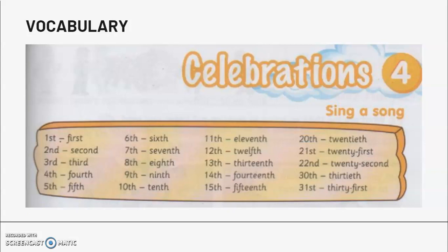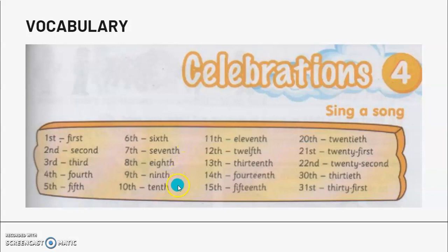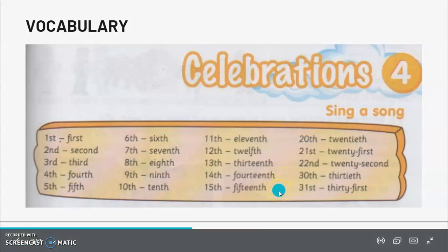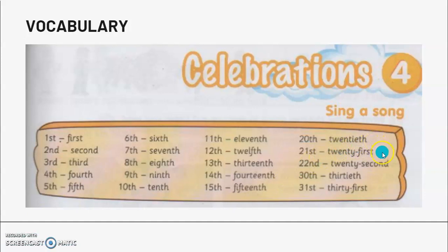Module 4. Celebrations. Sing a song. Vocabulary. First. Second. Third. Fourth. Fifth. Seventh. Eighth. Ninth. Tenth. Eleventh. Twelfth. Thirteenth. Fourteenth. Fifteenth. Twentieth. Twenty-fourth. Twenty-first. Twenty-second. Thirtieth. Thirty-first.